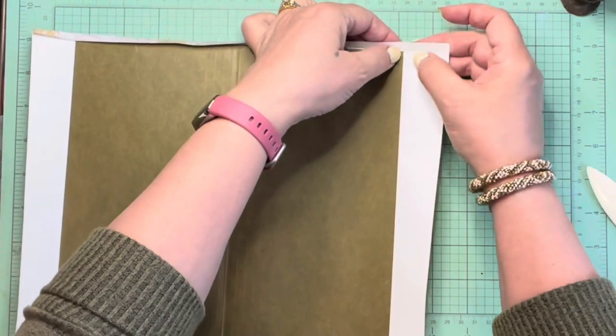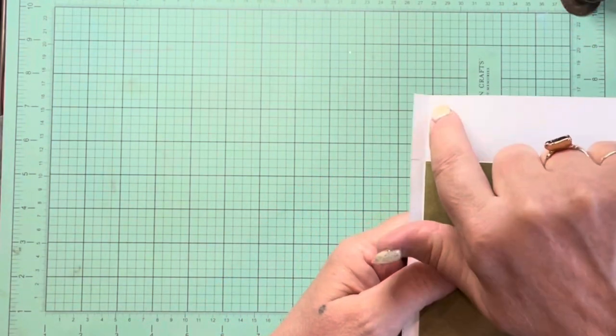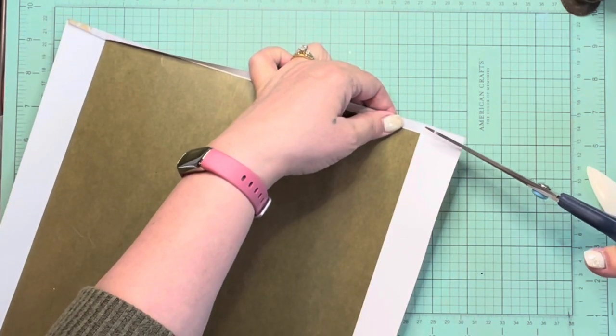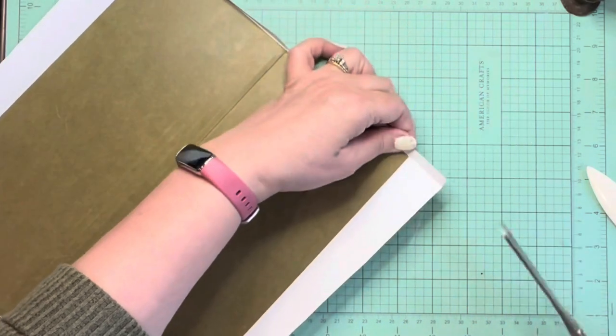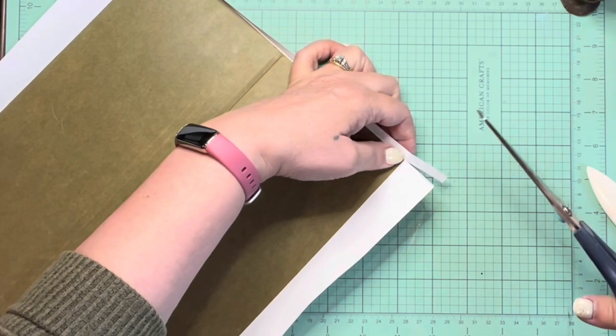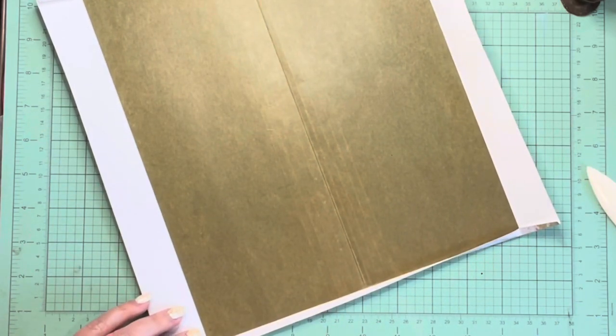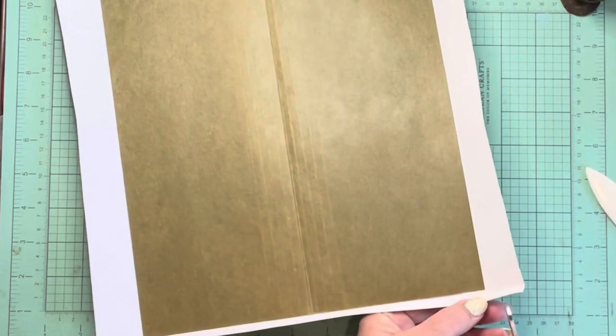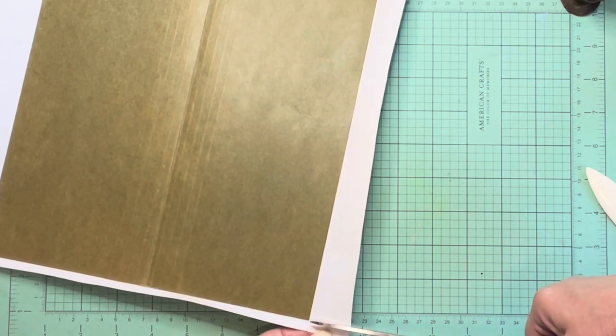When I do this, I can see where my excess material is going to be because of the fold lines. There's a line right there and a line right there. And I can just take my scissors. How do I want to do this? I want to make sure that my corner is covered. So I'm going to come in and clip along those lines.